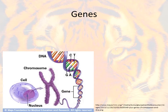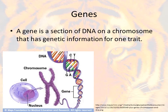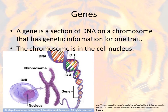We mentioned that a lot of this is done by genes, and that's something we say a lot without thinking about what they really are. A gene is a single section of DNA on a chromosome that has genetic information for just one trait, and that chromosome can be found inside the cell nucleus. If you look at this picture, you've got this long strand of DNA, and within a section of that DNA is the gene.